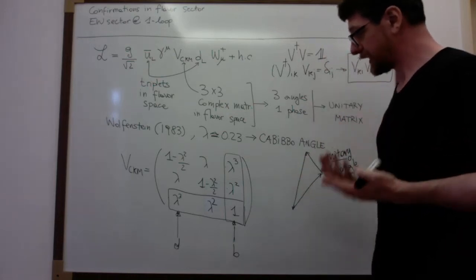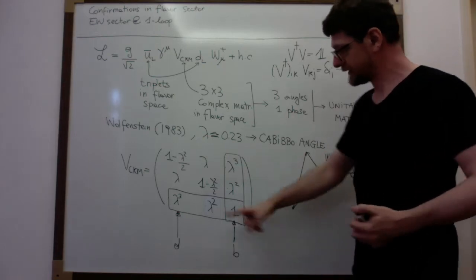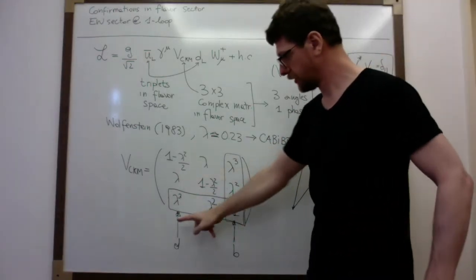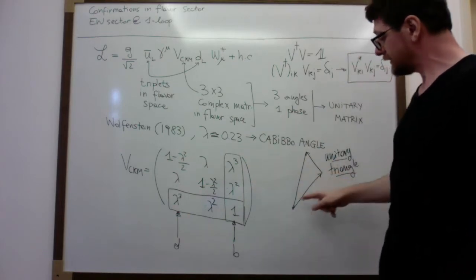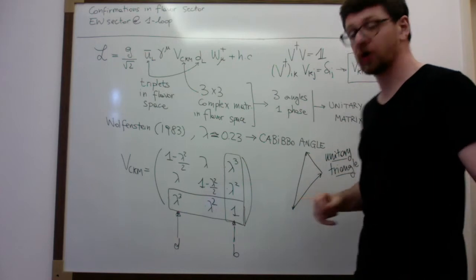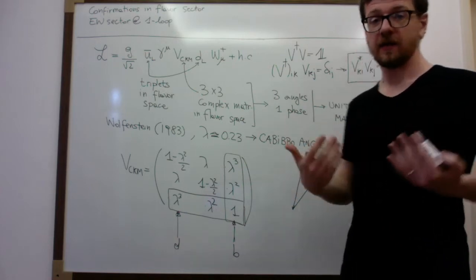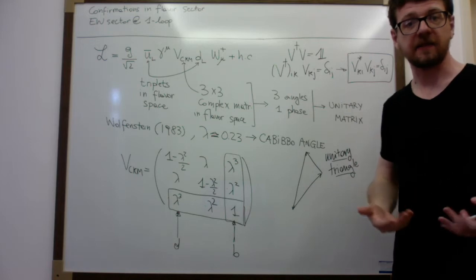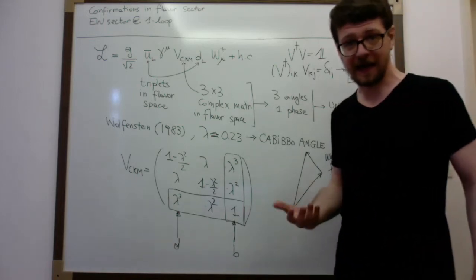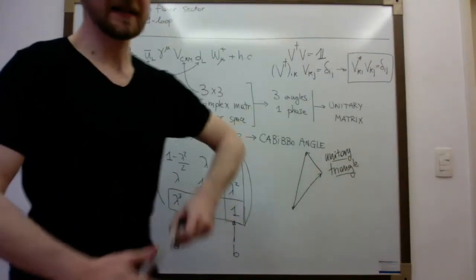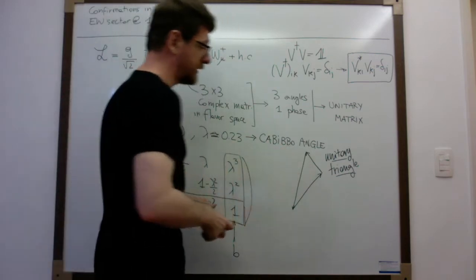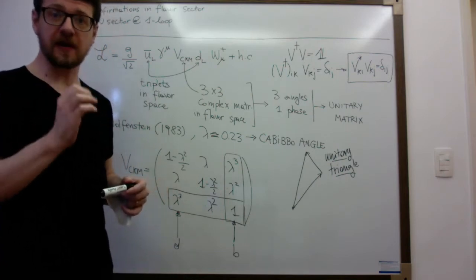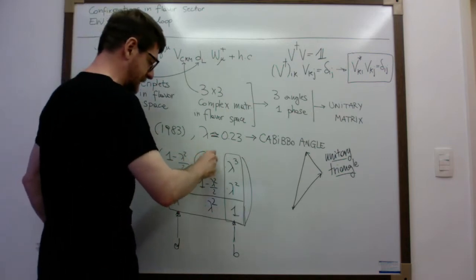So the idea from the experimental point of view is to try to actually measure that this triangle — constructed when i and j are equal to the first column and the third column — actually closes. If it closes, then we can say that this unitarity relation is satisfied. If it doesn't, then it means the prediction of the standard model is wrong and there is something else out there. The discussion of how to do this check experimentally is very complicated. So I just want to very quickly discuss how we can measure this particular element V_{ud}.